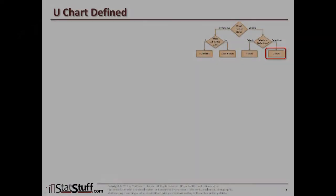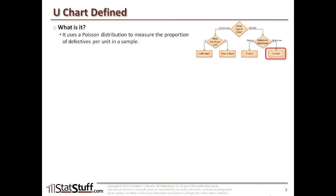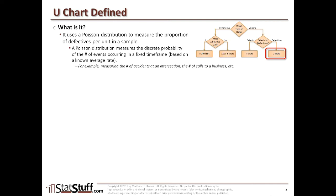Now let's more specifically dive into defining the U-chart. The U-chart uses a Poisson distribution to measure the proportion of defectives per unit in a sample. It's looking at how defective each unit is. Poisson distribution measures the discrete probability of the number of events occurring within a fixed time frame based on some sort of known average rate. It's ideal when the volume of units or opportunities vary across different stages, such as per shift or per day or per week.